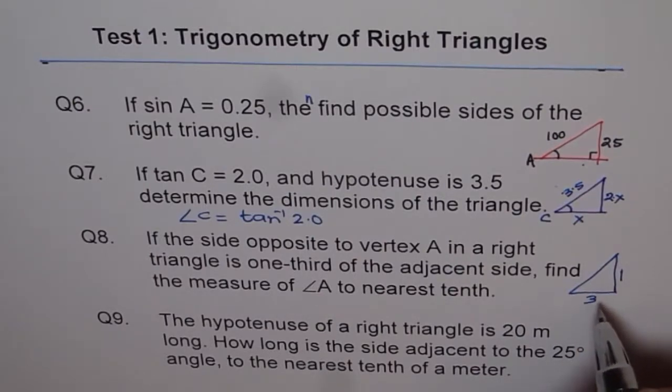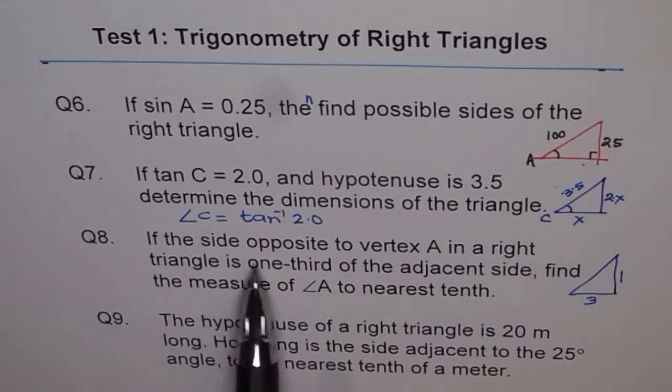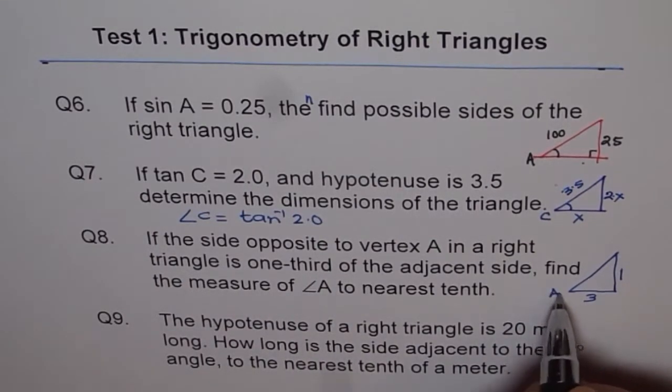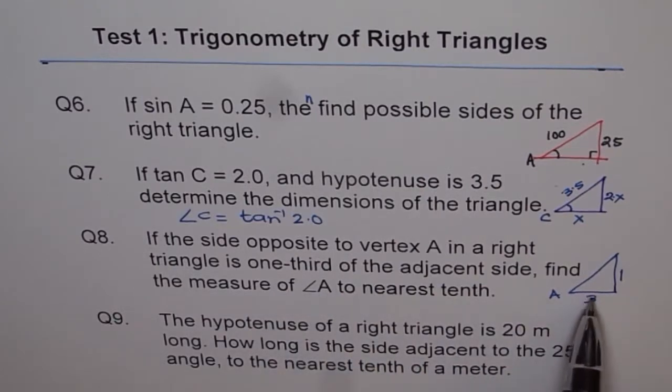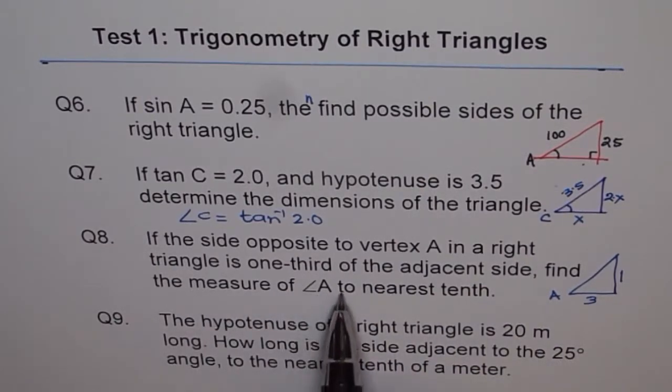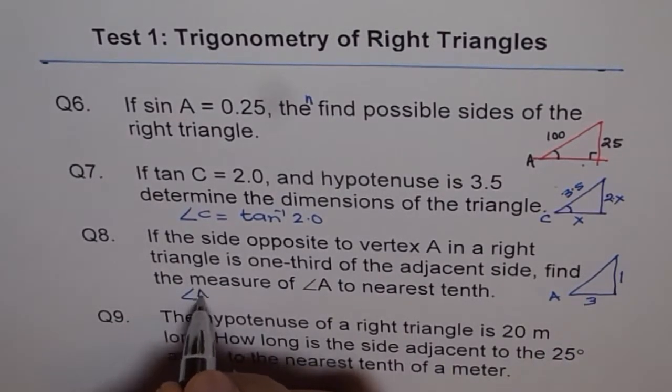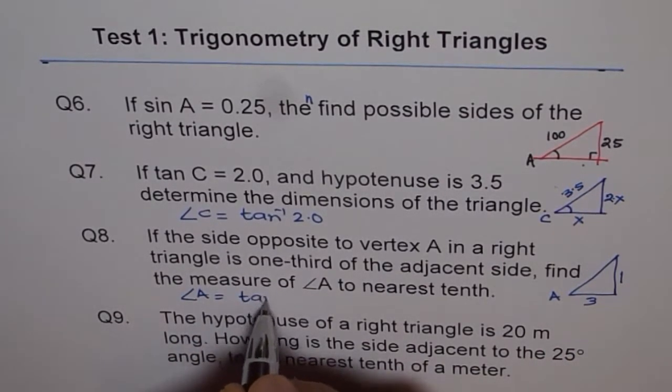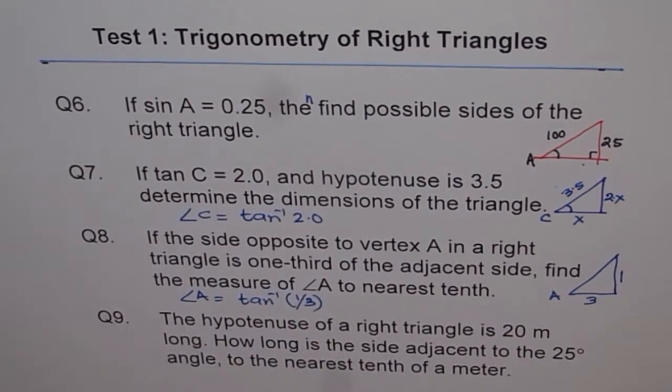If the side opposite to vertex A in a right triangle is one-third of adjacent side, find the measure of angle A. That means tan is 1 over 3, so angle A equals tan inverse of 1 over 3. That gives you the answer.